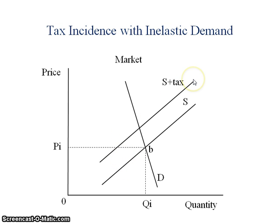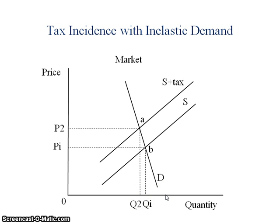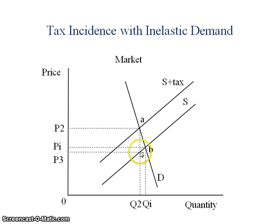I'm going to make a note of where that tax intersects my demand curve — that's going to be my new market price. Note the increase from P initial to P2, and likewise the decrease in quantity demanded from Q initial to Q2, which is not a big drop in quantity demanded. Now I need to figure out the price that the producer gets to keep; I find that where the new market quantity intersects the initial supply curve, and this is P3.